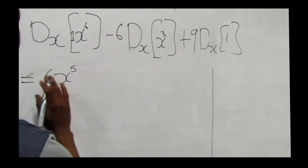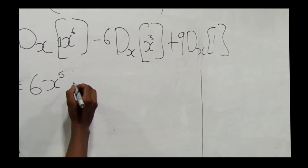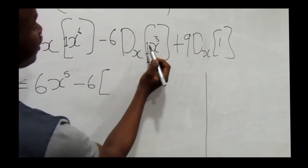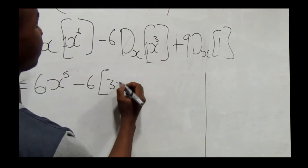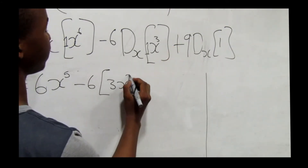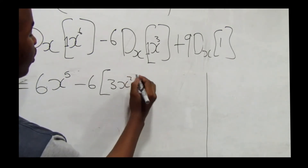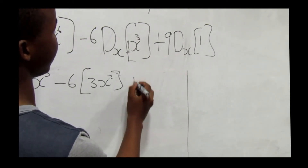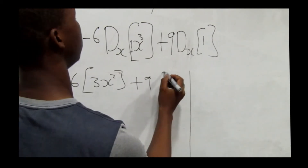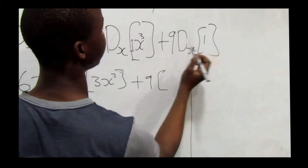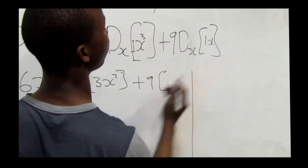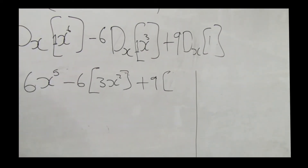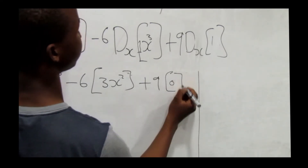For the negative 6x³ term: negative 6 times 3 times 1 is negative 18, and 3 minus 1 gives us x squared. For the constant 9: 9 times 1, and since there is no x — the power of x is zero, which equals 1 — when differentiating any constant the answer is zero.